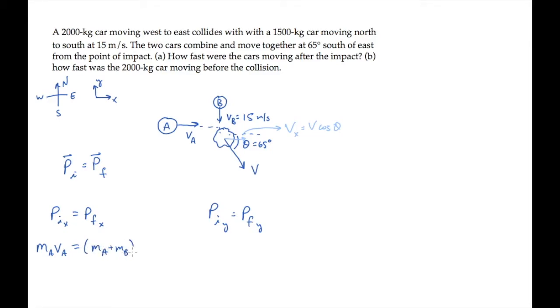There are two unknowns in this equation: the initial speed of car A and the final velocity v after the collision. So let's set this equation aside for a minute and look at the vertical component.